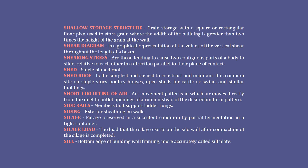Short-circuiting of air: air movement patterns in which air moves directly from the inlet to outlet openings of a room instead of the desired uniform pattern. Side rails: members that support ladder rungs. Siding: exterior sheathing on walls. Silage: forage preserved in a succulent condition by partial fermentation in a tight container.